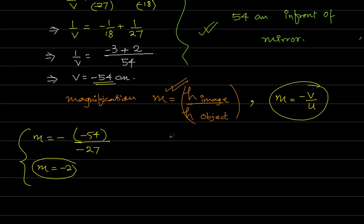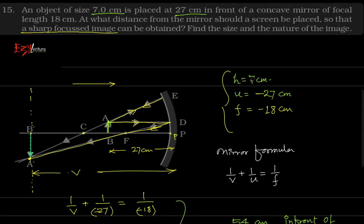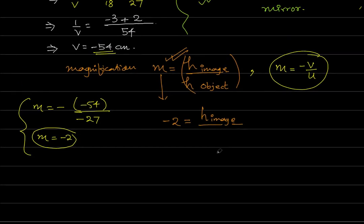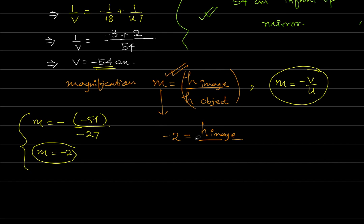If we use this formula, then we have magnification, it is minus 2. It should be equal to height of image, which we don't know. We have to calculate this. So, height of image divided by height of object. It is given in the question. Height of the object is 7 cm. So, upon 7. Finally, we will have h image equals to minus 14 cm.